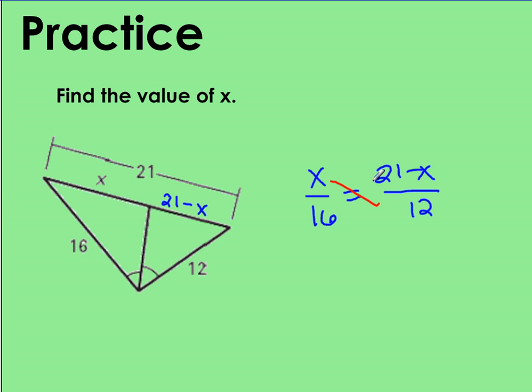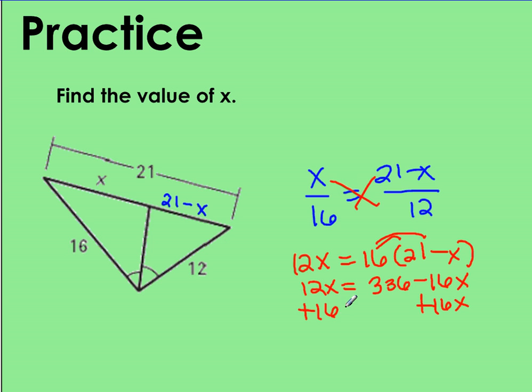When we cross multiply in order to solve, we have 12x is equal to 16 times (21 minus x). We have to distribute in order to simplify. And we'll have this be 336 minus 16x. We still have 12x on the left-hand side of our equation. We're going to add 16x to both sides. And we have 28x is equal to 336. And so x will be equal to 12.